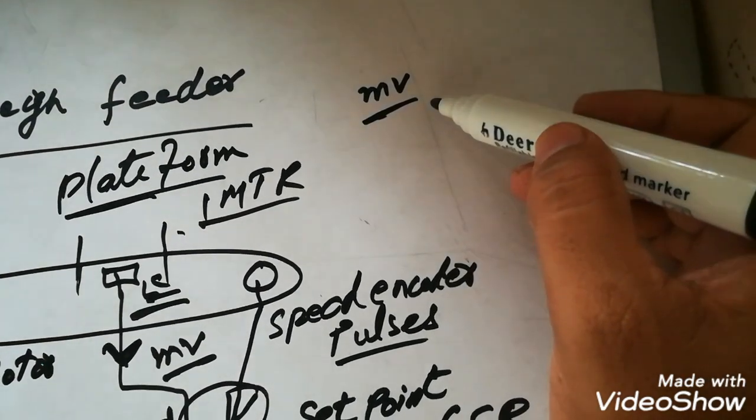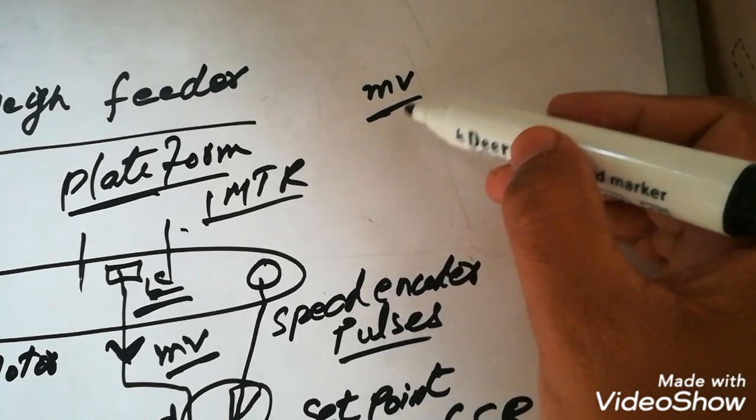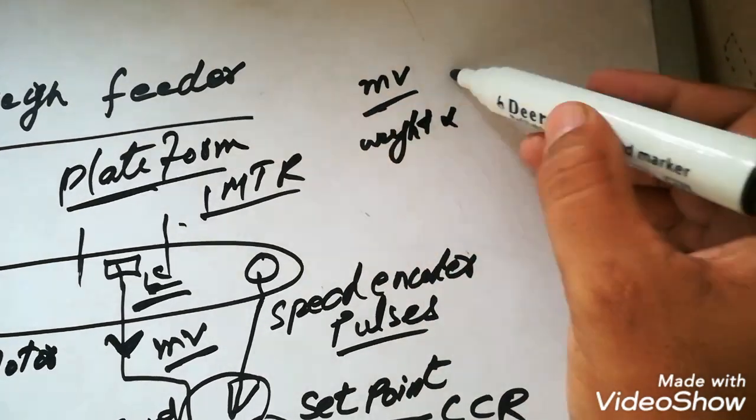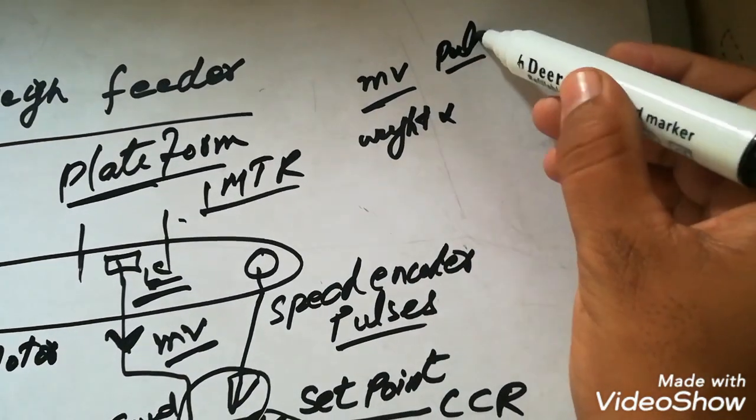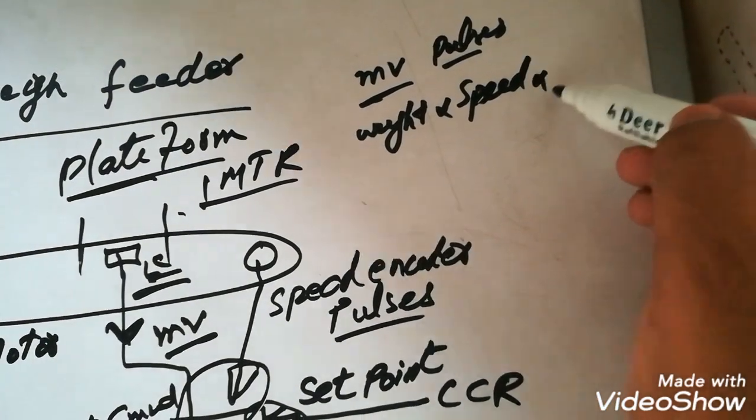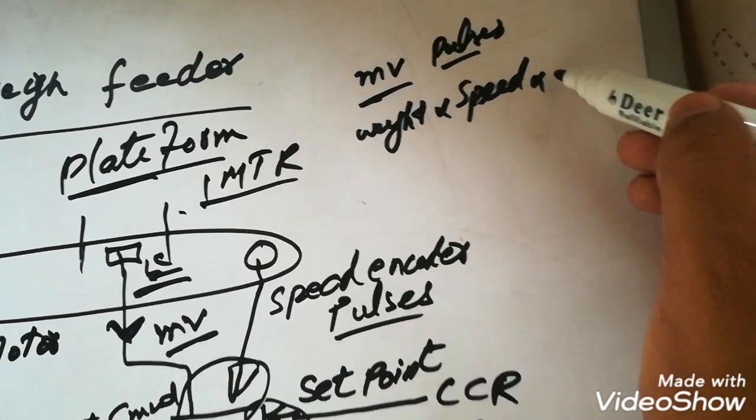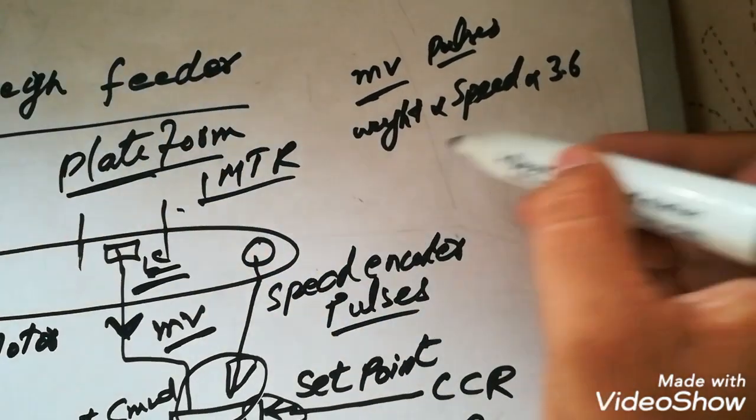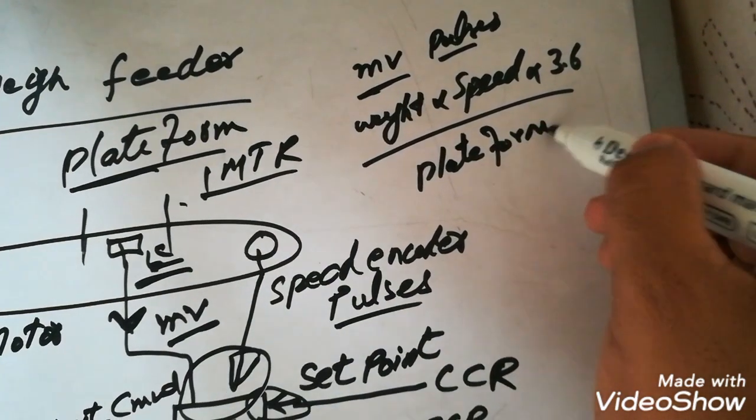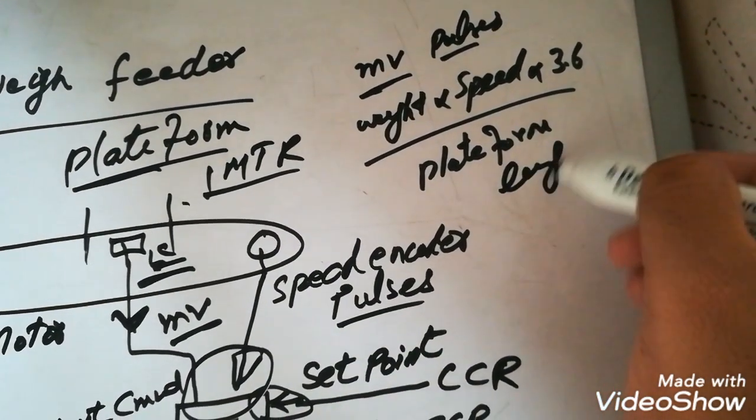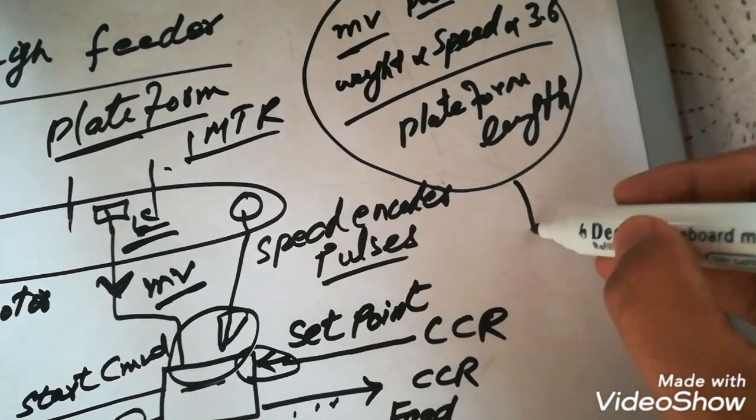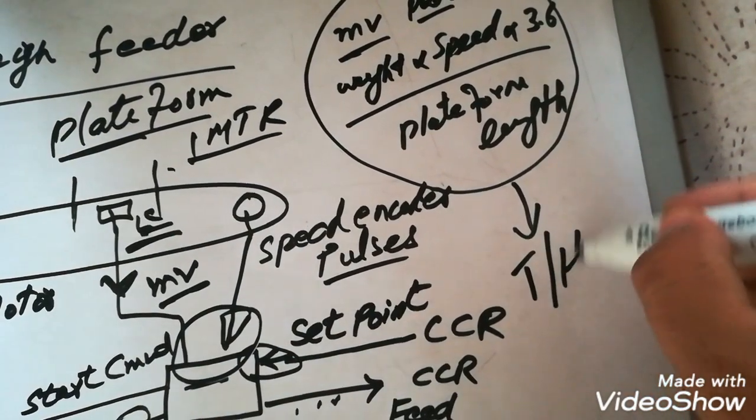How this controller calculates the load in ton per hour? It takes the millivolt, this is our weight, and the pulses from the encoder is our speed of the wave feeder. As you know, our ton per hour is weight multiplied by speed multiplied by 3.6 divided by platform length. So this is the formula to calculate the ton per hour of the wave feeder.